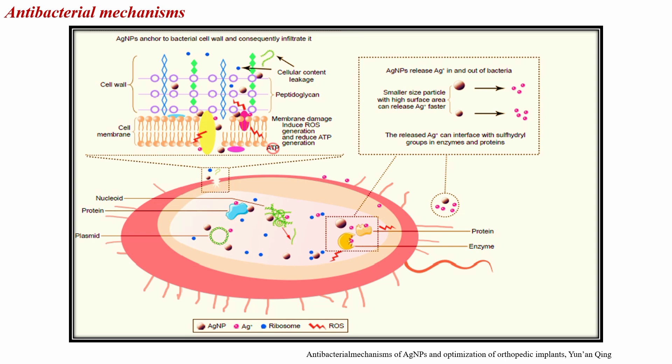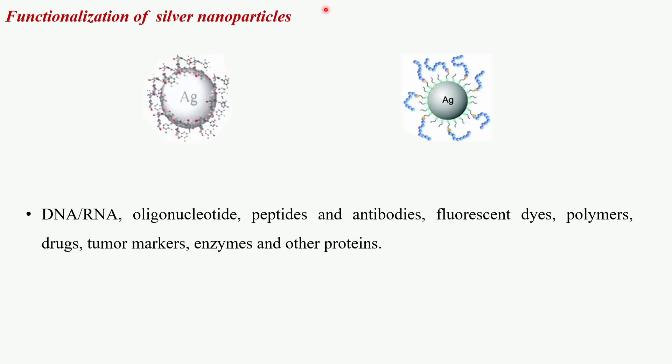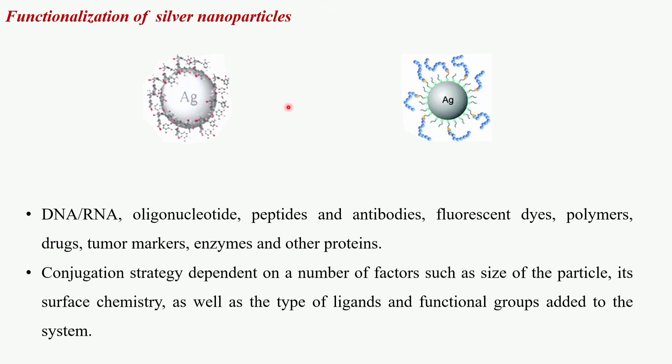Silver nanoparticles can be functionalized with various molecules to enhance their properties and tailor them for specific applications. Key types of functional molecules include DNA, RNA, and oligonucleotides, peptides and antibodies, fluorescent dyes, polymers, drugs, tumor markers, enzymes, and other proteins. The effectiveness of functionalization depends on factors such as particle size, surface chemistry, ligands, and functional groups. These tailored silver nanoparticles find applications in medicine, diagnostics, imaging, and environmental monitoring.